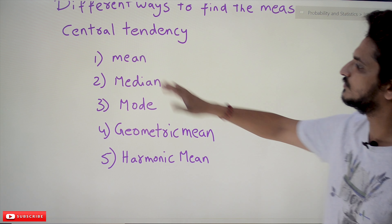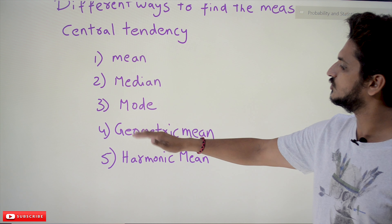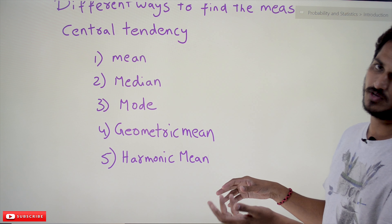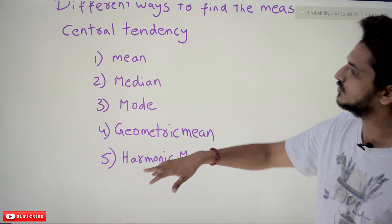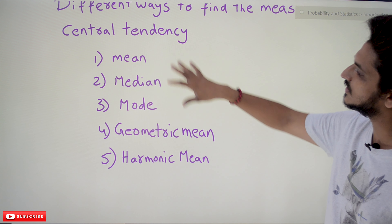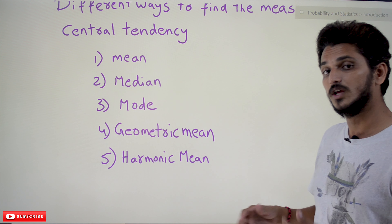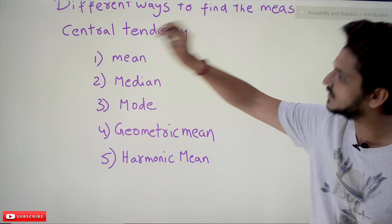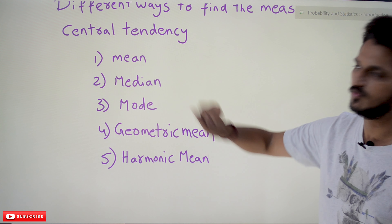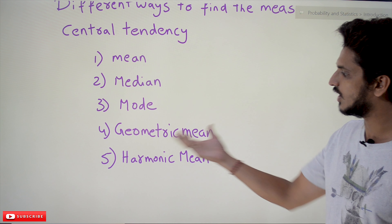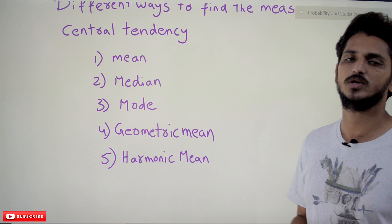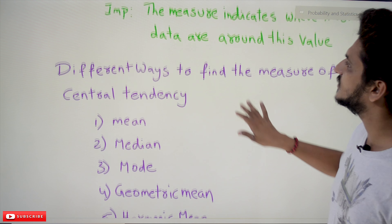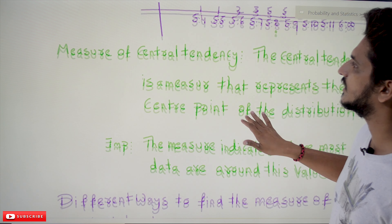Now, there are different ways to find the measure of central tendency. The first ones are mean, median, mode, geometric mean, and harmonic mean. These are the most commonly used ways, though some other ways also exist. We are going to discuss these concepts step by step — for which data mean is good, for which data median is good, what are the disadvantages of mean, where to use mode, and where to use geometric mean.